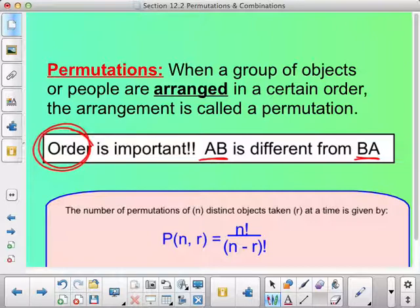So the number of permutations of n distinct objects taken r at a time is given by: This shows that it's a permutation, n objects at r at a time. And here is our equation that we use. It is n factorial divided by n minus r factorial.